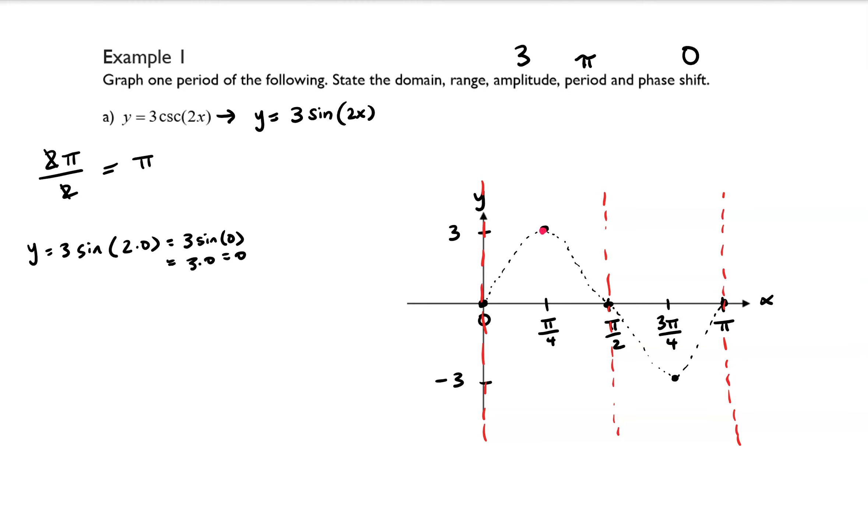So I know that the highest and lowest points are shared with the sine graph. Well, let's see an example of how that's true, so y equals 3 times cosecant of 2 times... Let's plug in pi over 4 and see what happens.